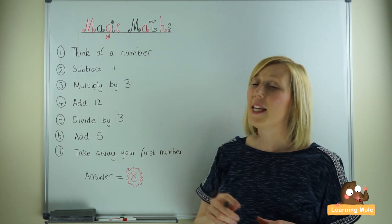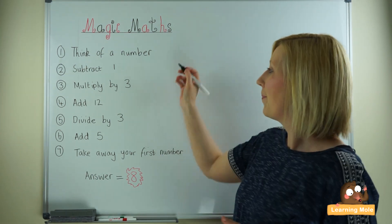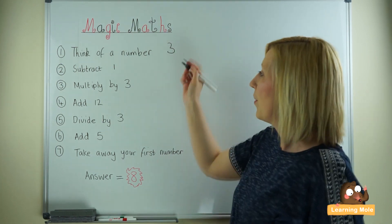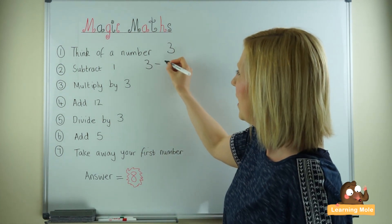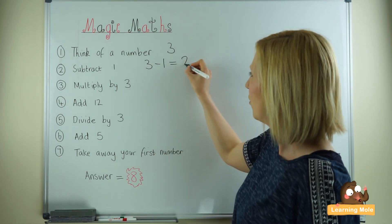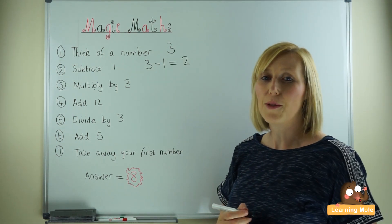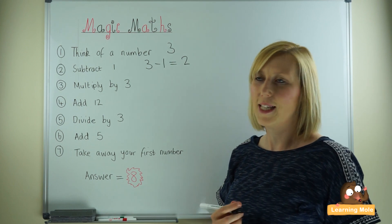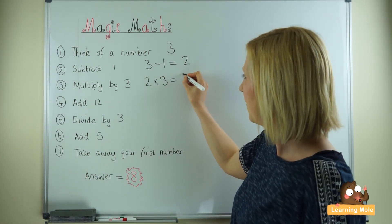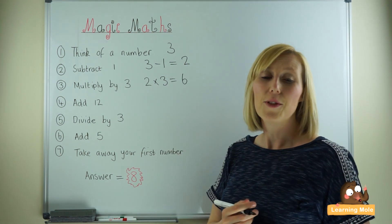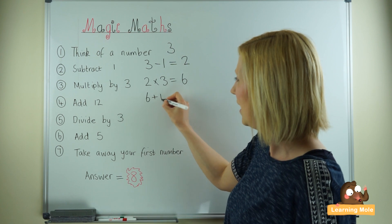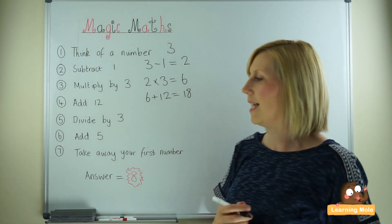Okay, so thinking of a number, let's start with 3. Subtract 1, so we're going to do our calculation: 3 take away 1, which gives us 2. Now we're going to multiply it by 3, a really good way of practicing those times tables. Now we're going to add 12 to our answer, so we've got 6 and we're adding on 12 to get us to 18.